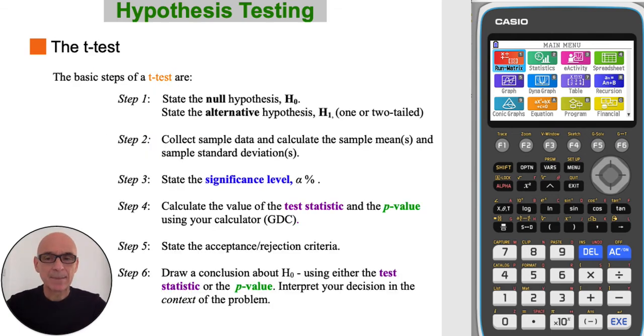The basic steps of a t-test are step one, to state the null and alternative hypotheses, and that could be a one- or a two-tailed alternative hypothesis. Step two, to collect sample data and calculate the sample mean and sample standard deviation. Step three, to state the significance level.